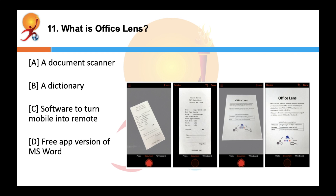What is Office Lens? The correct answer is A — Office Lens is an image scanner optimized for mobile devices. It captures a document via the camera and then straightens the document portion of the image.